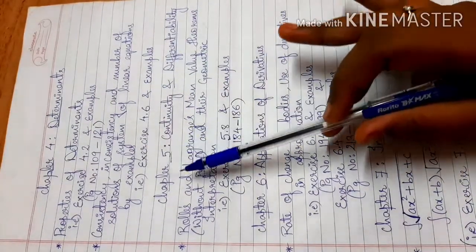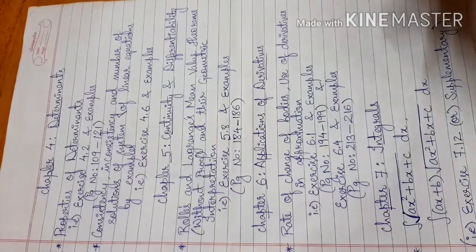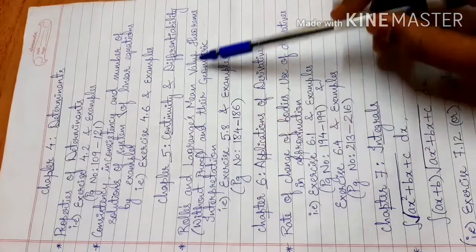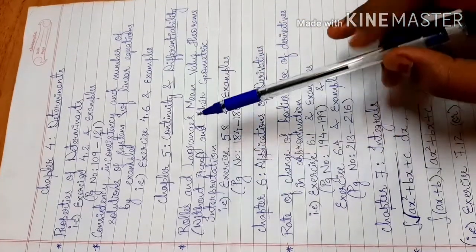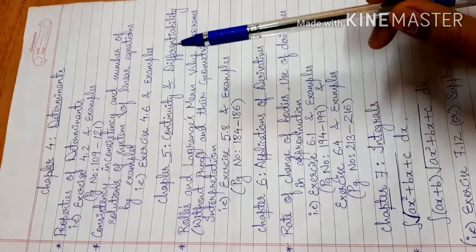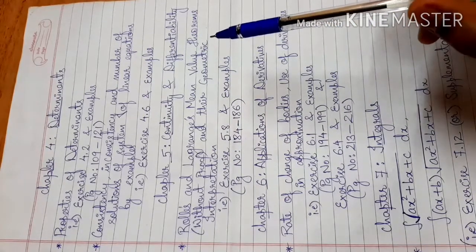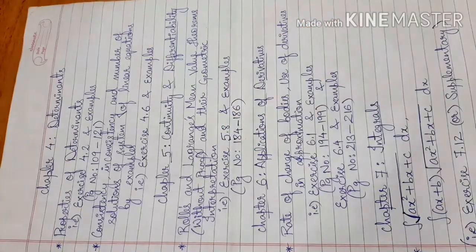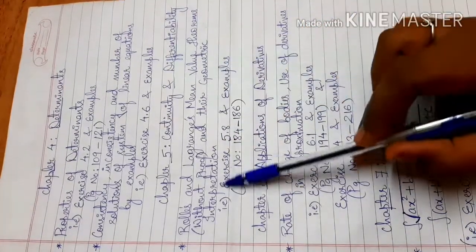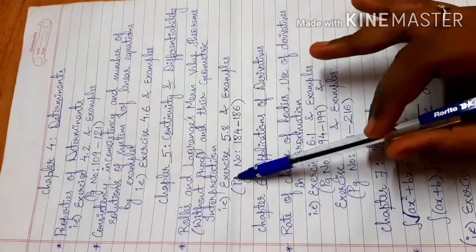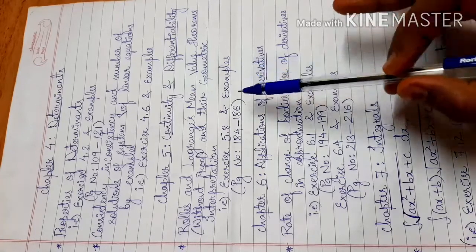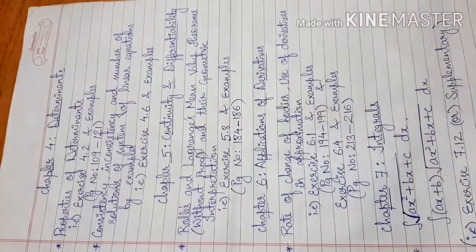Next is Chapter 5, Continuity and Differentiability. Here, Rolle's Theorem and Lagrange's Mean Value Theorem, without proof, and their geometric interpretation — the full topic — is reduced. Exercise 5.8 and related examples, page number 184 to 186, is deleted.